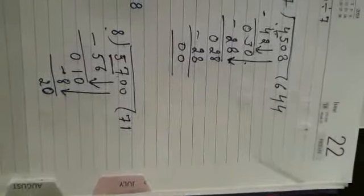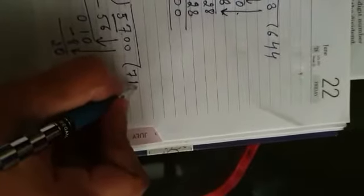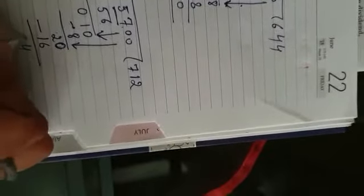Now check for 20. 8 ones are 8. 8 twos are 16. 8 threes are 24. Now we will take 8 twos are 16. 10 minus 6 is 4. 1 minus 1 is 0.